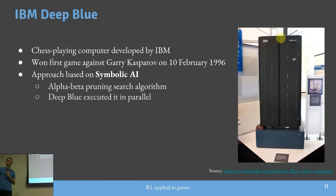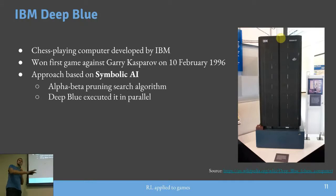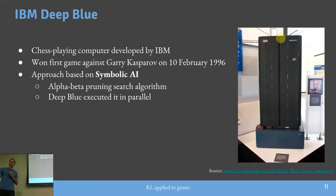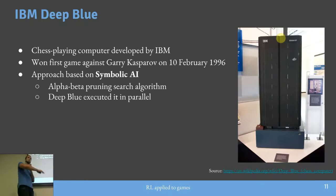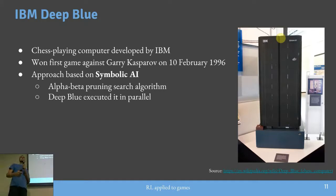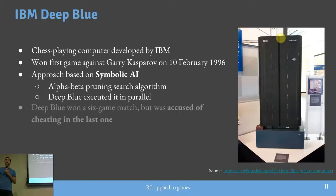Para um algoritmo clássico de xadrez funcionar, precisa-se de uma forma de avaliar o estado do jogo — saber se aquela posição é boa, dar um valor para isso — e de um algoritmo de busca para identificar o movimento mais eficiente. O Deep Blue tinha um chip completamente feito para o tipo de cálculo necessário, rodando o algoritmo Alpha-Beta Pruning, que é uma modificação do MinMax mais eficiente, cortando pedaços da árvore de busca.